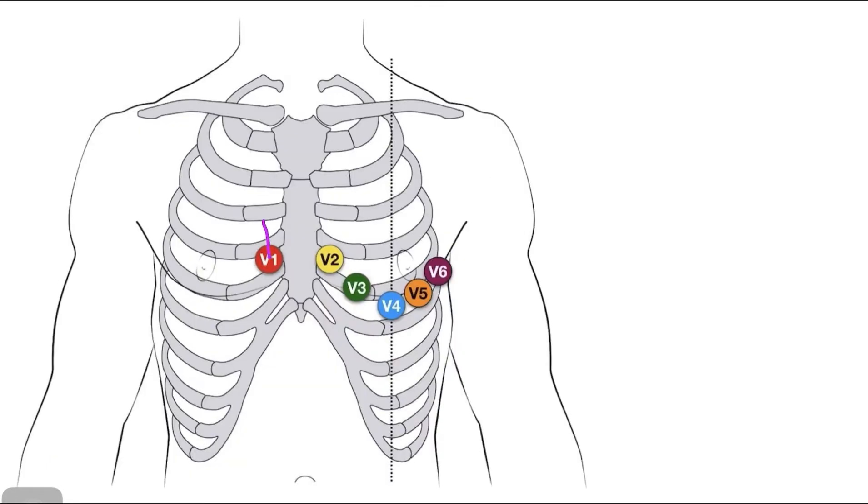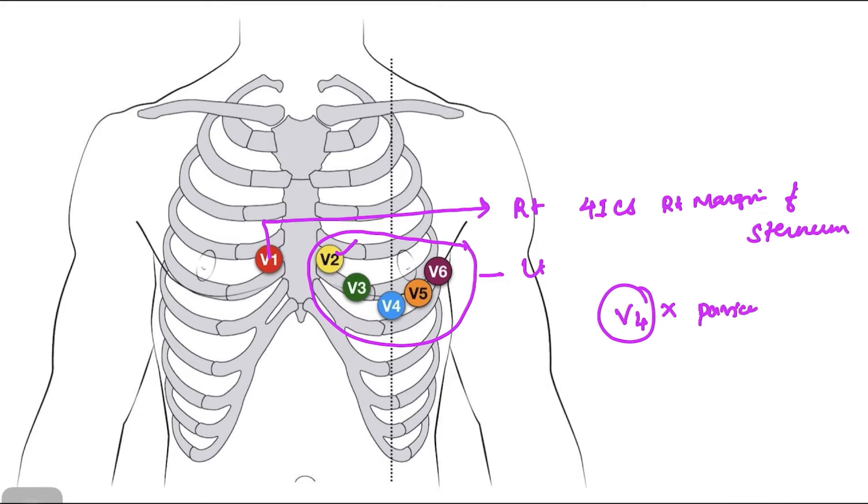See that lead V1 is placed in the right side. Other leads are placed in the left side. It is placed in the right margin of the sternum in the fourth intercostal space. The other lead V2 is placed in the left margin of the sternum in the fourth intercostal space. The most peculiar is V4 because it does not have a particular place. They usually say that it is placed in the fifth intercostal space in the mid clavicular line, but it is not the ideal place. V4 is always placed at the cardiac apex. What is the difference? The cardiac apex is usually in the fifth intercostal space medial to the mid clavicular line.